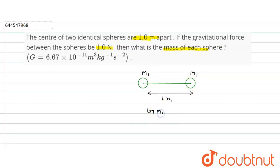So this G m1 into m1 upon r square, that is 1 square, is equal to how much? 1 Newton is given.